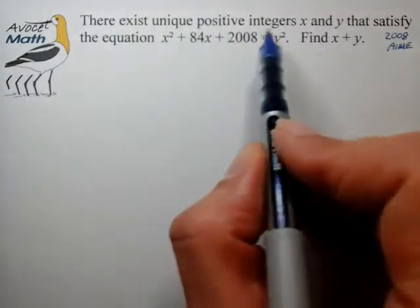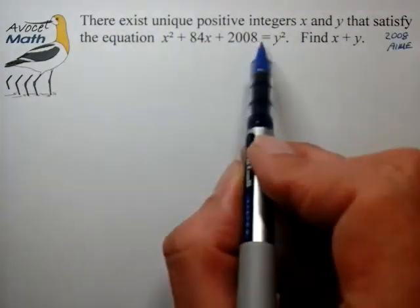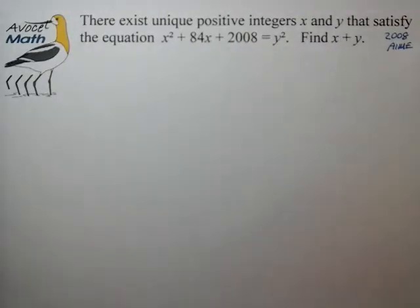There exist unique positive integers x and y that satisfy the equation x² + 84x + 2008 = y². Find x + y.